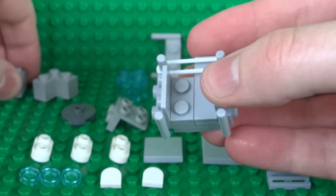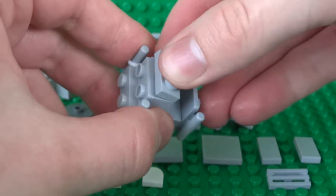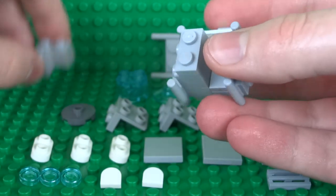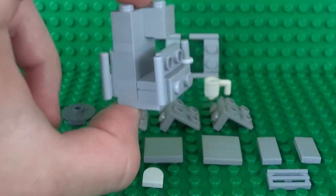Then we can build this up with a 1x2 brick and another 1x2 plate, then a 2x2 corner brick over on the top of that construction.